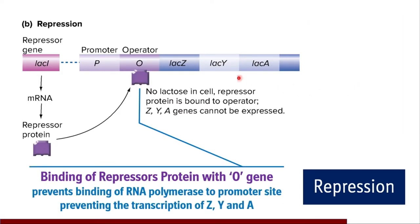Binding of the repressor protein with the O gene prevents the binding of RNA polymerase to the promoter site, thereby preventing the transcription of structural genes Z, Y, and A. This repression of lac operon occurs in the absence of lactose. When there is no lactose in the cell, repression occurs and transcription does not take place — there is no need to synthesize enzymes when no substrate is available.